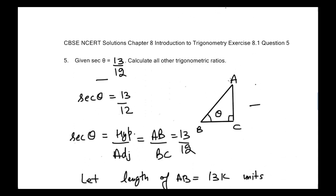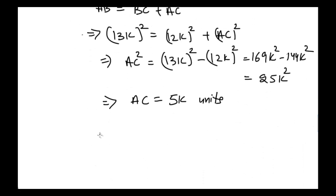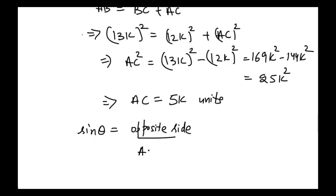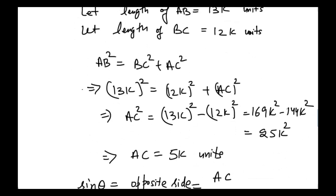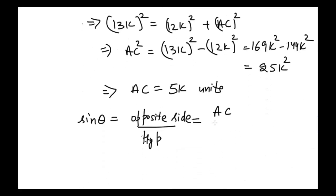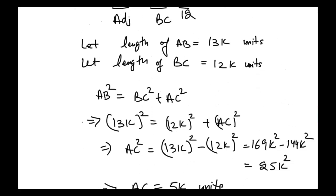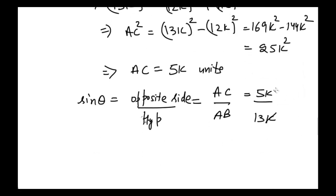Now we can find all trigonometric ratios. Starting with sine: sine of any given angle is equal to opposite side divided by hypotenuse. The opposite side to angle theta is AC and the hypotenuse is AB. AC is equal to 5k and AB is 13k, the k's cancel, so sine theta is equal to 5 divided by 13.